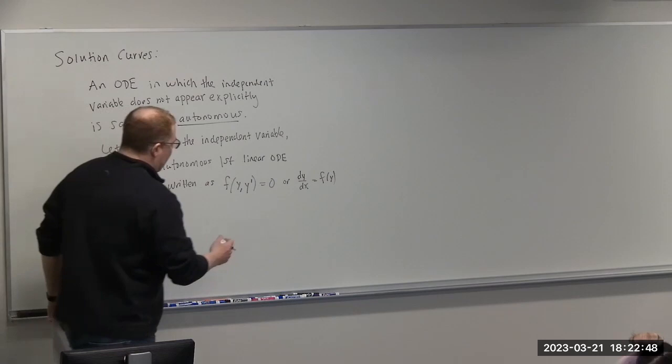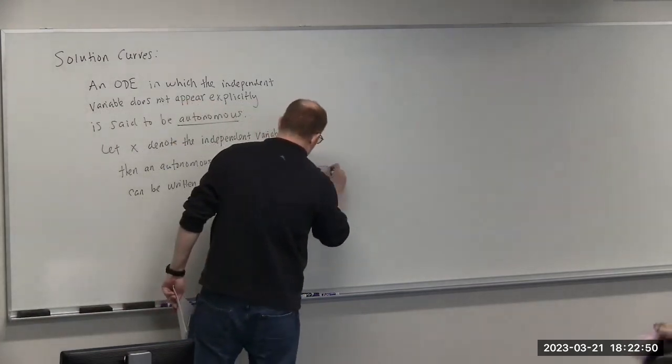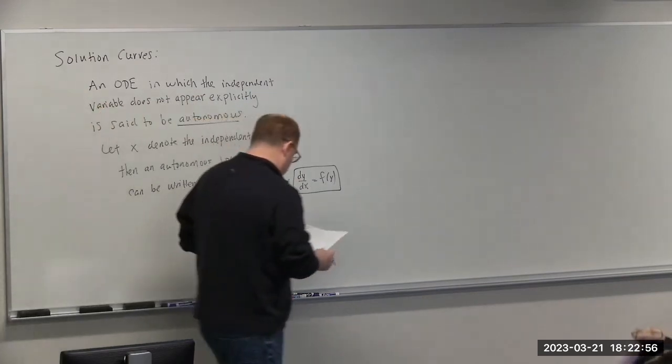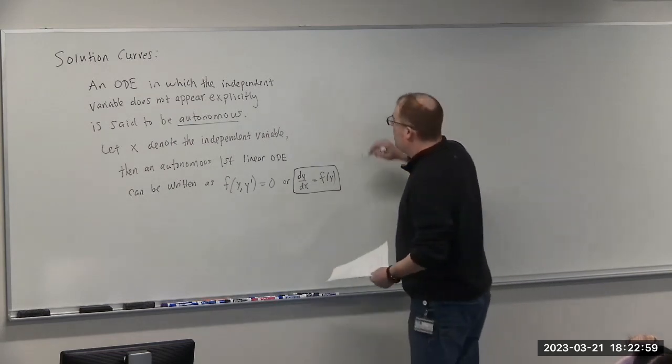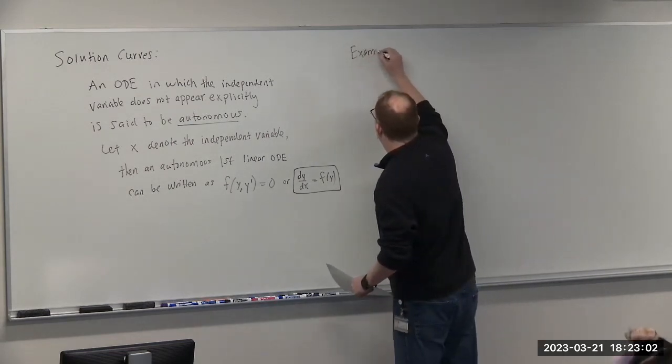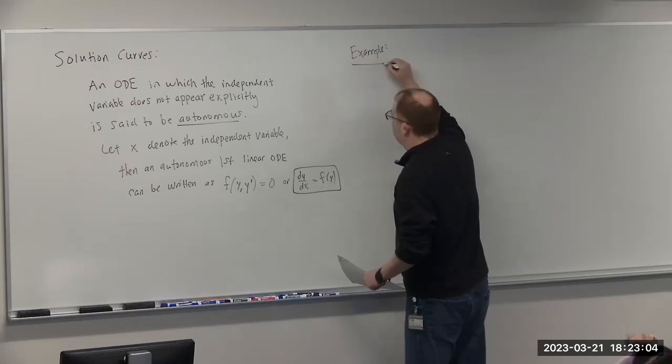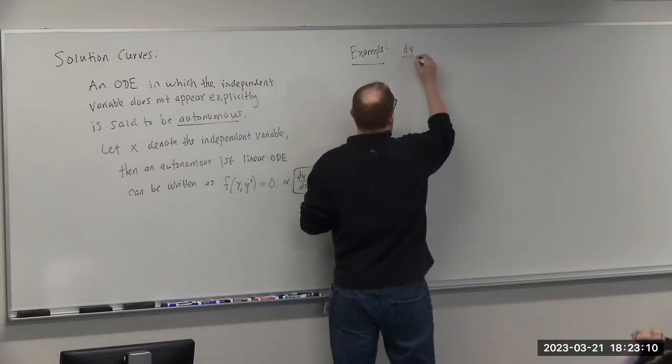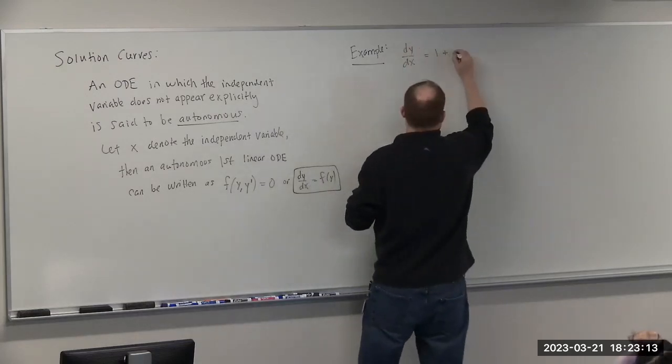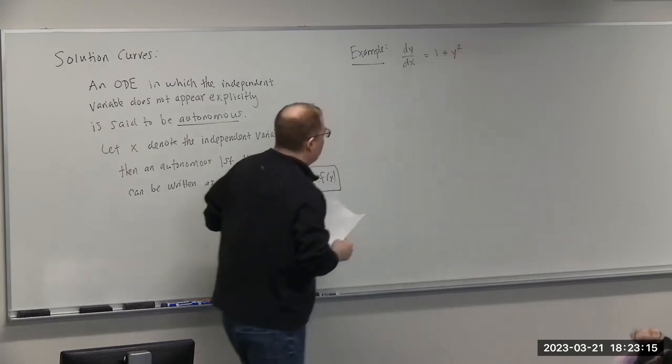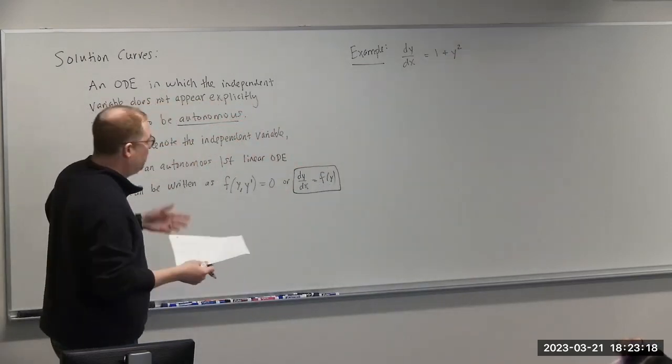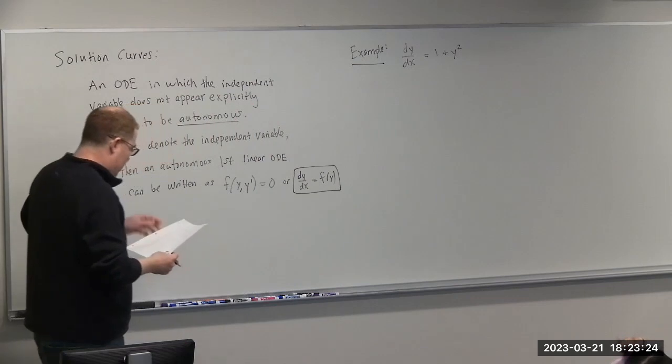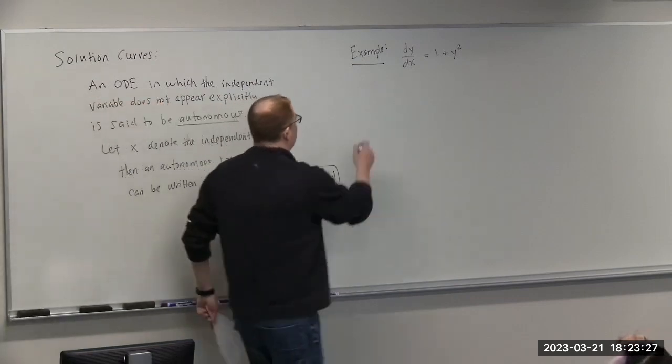There's a lot of applications that are particularly in this form. Let me give an example. An example would be dy/dx equals one plus y squared. So you have dy/dx equals some function in terms of the dependent variable. That is an example of an autonomous first order ODE.